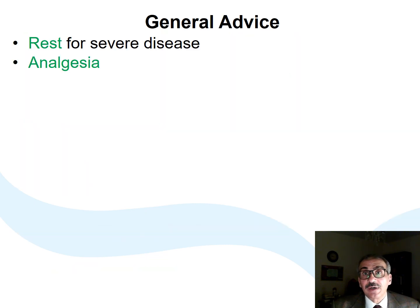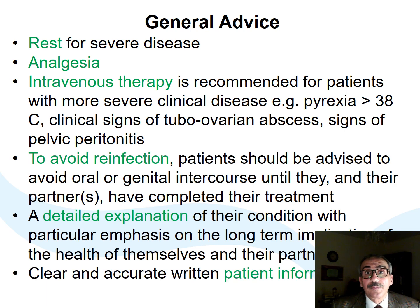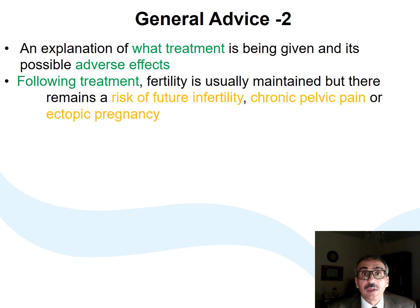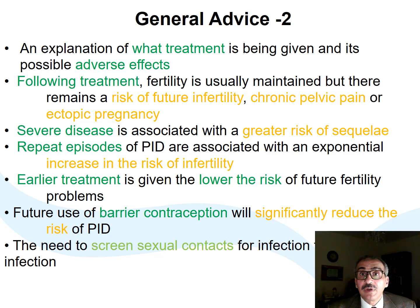Rest and analgesia are essential, especially in severe disease. Parenteral therapy is recommended in severe PID. Good patient and partner information plays an important role in preventing recurrence. Various treatment risks should be explained clearly. The risk on future fertility with mild, moderate, severe and recurrent disease as an important sequelae of PID should be explained. The benefits of early management start, use of barrier contraception, and screening of sexual partner should be emphasized.